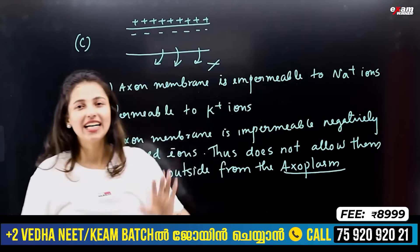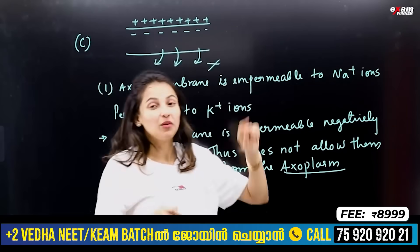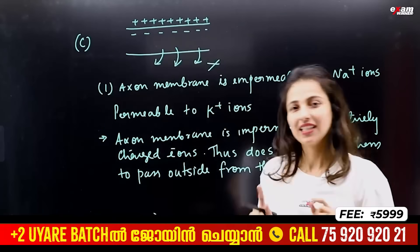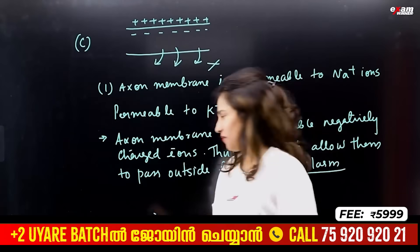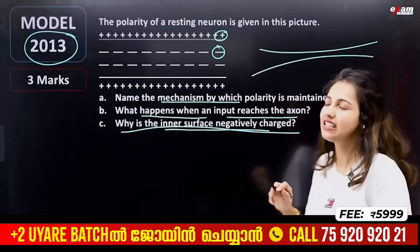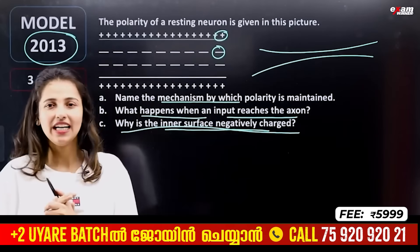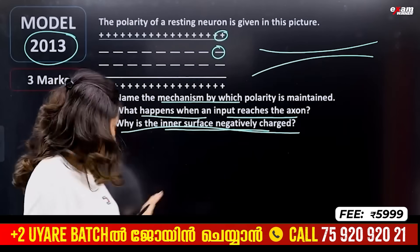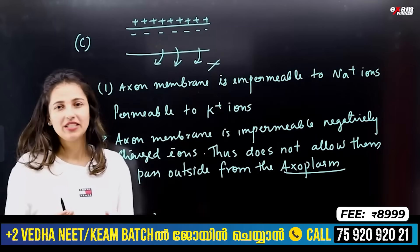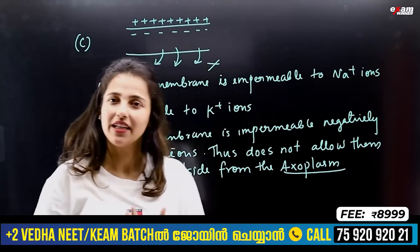The axon membrane has negative charges inside. The answer to why the inner surface is negatively charged involves three points: sodium ions are impermeable, and negatively charged ions are present inside.